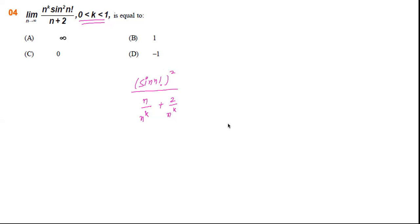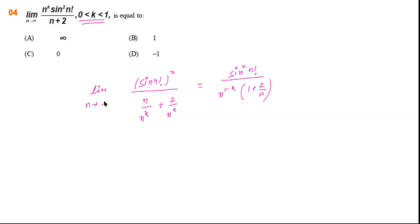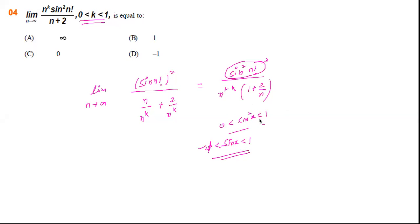This is the basic understanding needed for limits. Since k is between 0 and 1, we can rewrite this as sine squared of n factorial divided by n raised to the power (1 minus k), all over 1 plus 2/n, as n tends to infinity. Now, this numerator quantity is finite because we know sine x always lies between minus 1 and 1, so sine squared x always lies between 0 and 1.